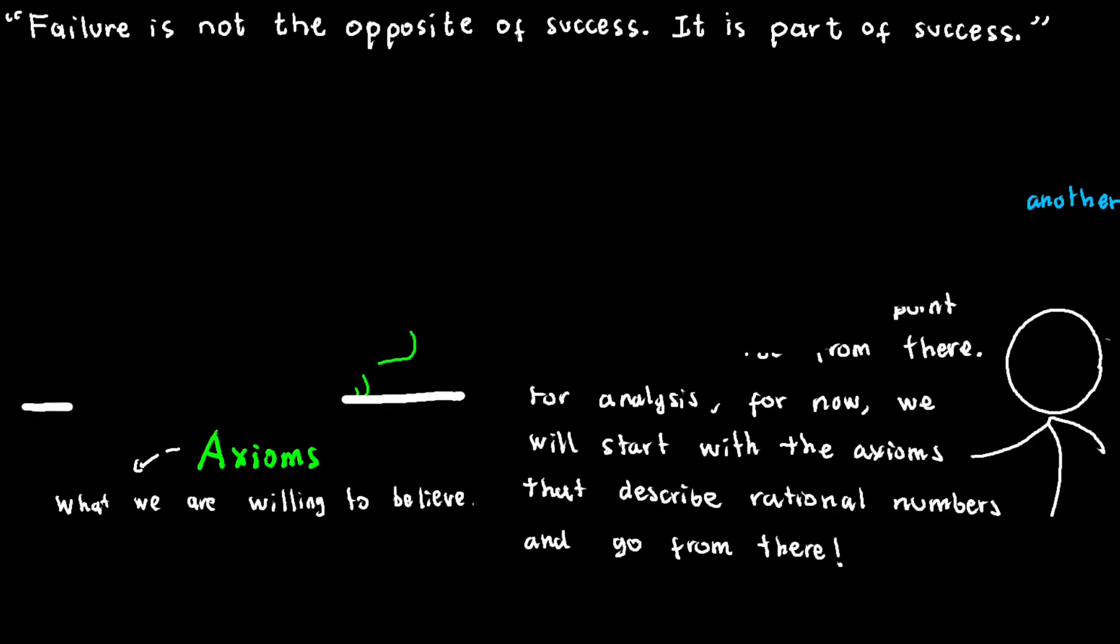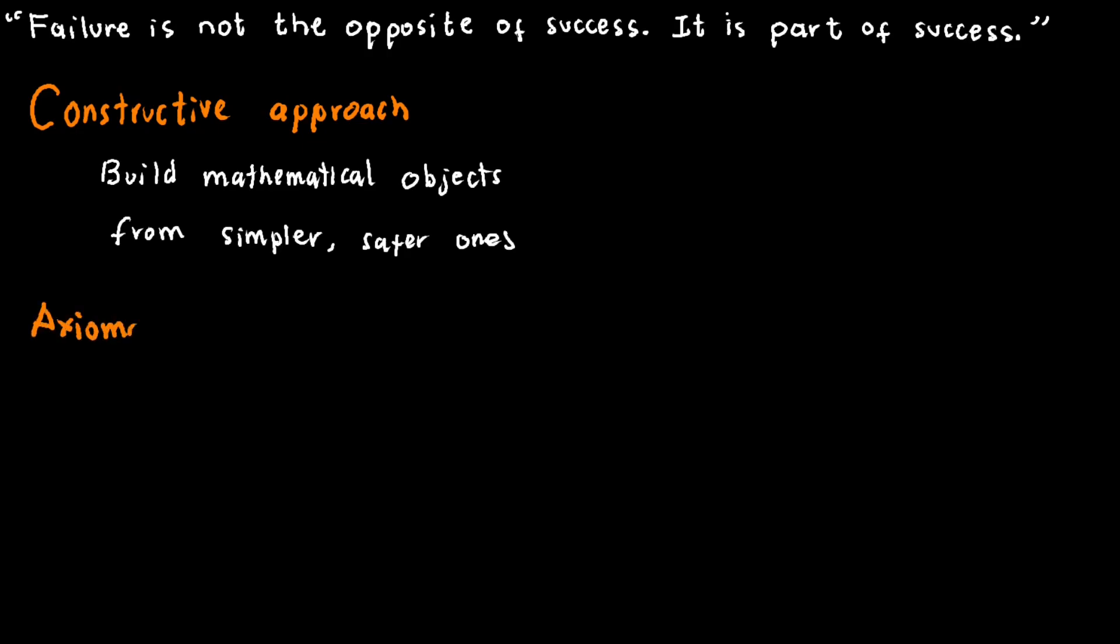In summary, our mathematical journey presents two distinct routes: the constructive path, where we meticulously build mathematical objects from purportedly simpler ones, or the axiomatic route, where we define the mathematical object through axioms and deduce truths using prescribed deduction rules.